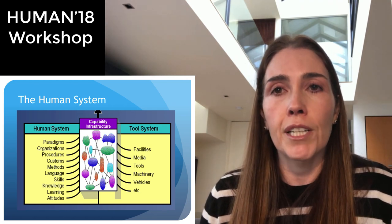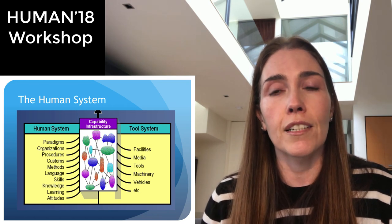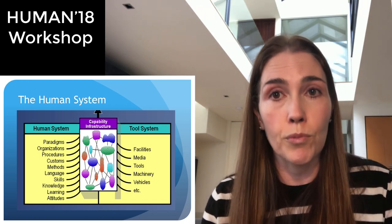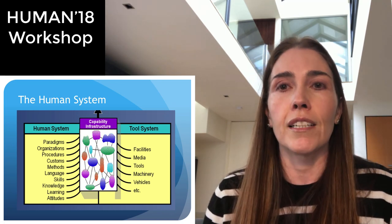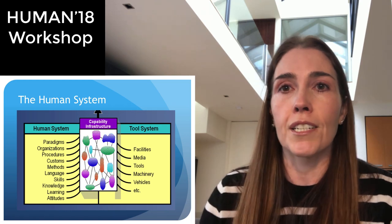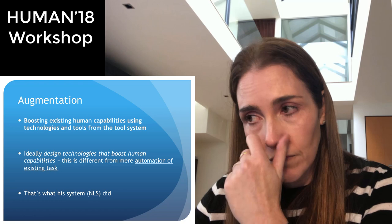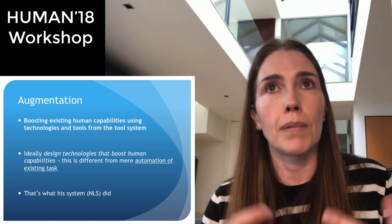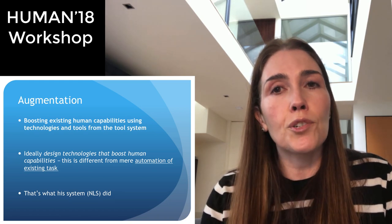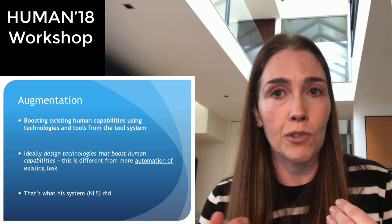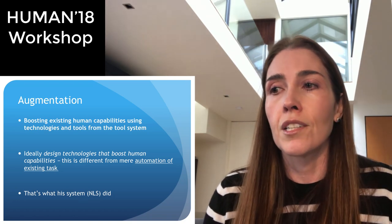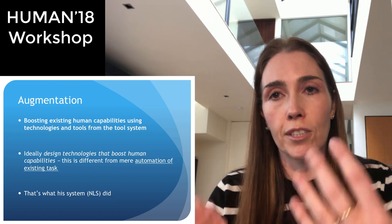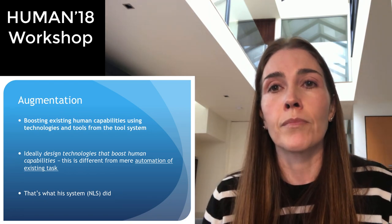Doug really wanted, from the beginning when he was designing what he called the oNLine System — the first hypertext system and really the first screen-based computer system — to boost our capacity as a species to deal with knowledge. This is species-level thinking: locating a human capability and then boosting that using technology. The idea behind the tools he designed was to boost what we're capable of as a species, which he called our collective IQ.